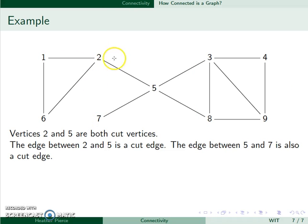We also have two cut edges. For instance, if I ignore this edge between 2 and 5, you'll see that I have two separate components.